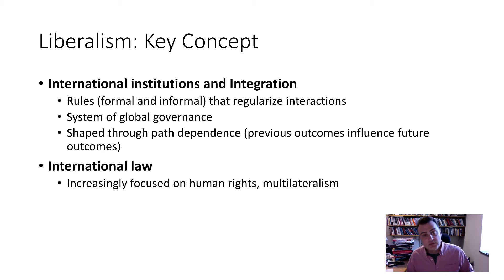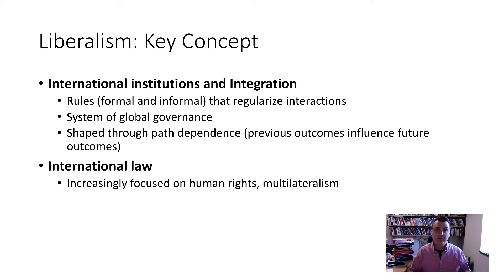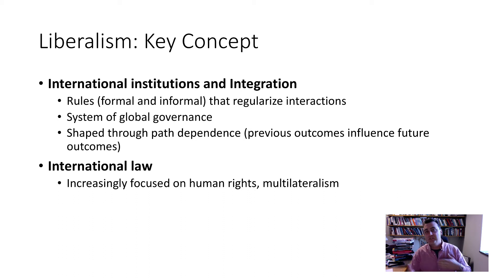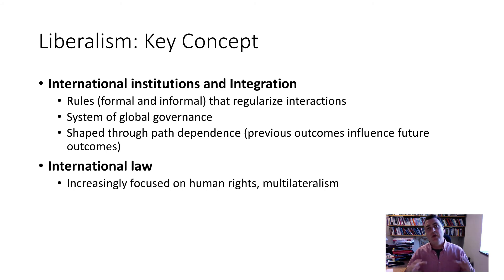Finally, international law primarily governs interaction between countries — an agreement between states binding those who are party to it. It also encompasses human rights law, governing how countries treat their own citizens. So we have both international law and human rights law as key pillars. These are the key concepts, and together they give a good sense of how liberal theory views contemporary and past international relations through a very different lens compared to realism.